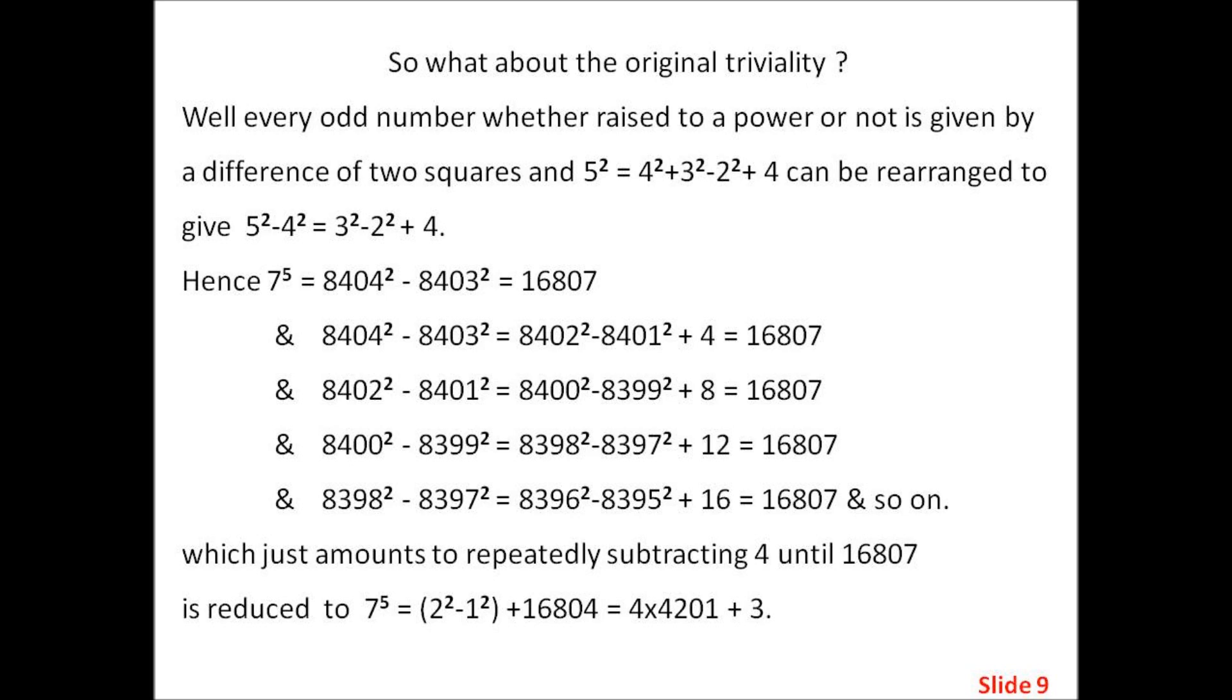And so on, which just amounts to repeatedly subtracting 4 until 16807 is reduced to 7 to the power of 5 equals 2 squared minus 1 squared plus 16804 equals 4 times 4201 plus 3.